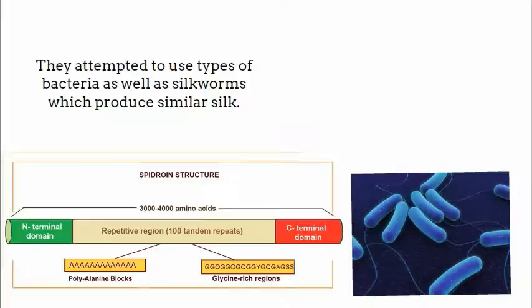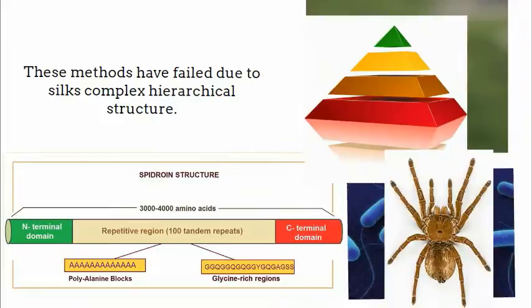Scientists' best attempts at farming spider silk were through spidroin recombination methods. They attempted to use types of bacteria as well as silkworms, which produce similar silk. These methods have failed due to silk's complex hierarchical structure.